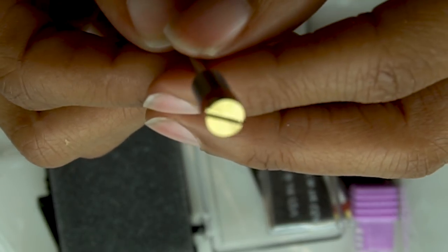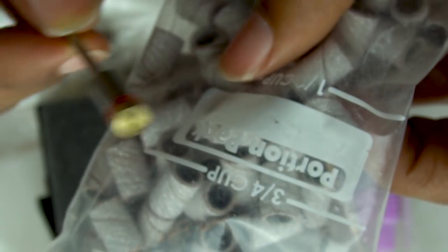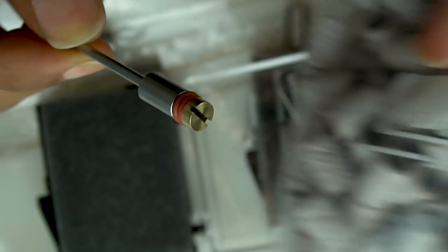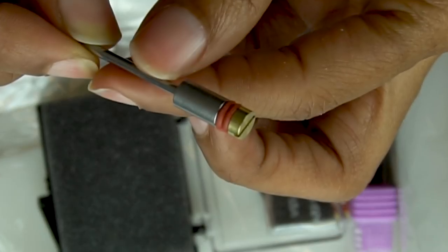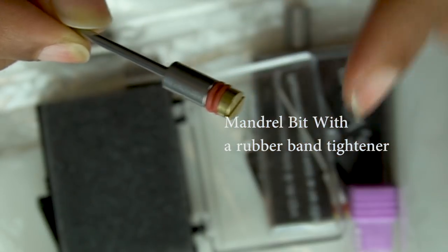You also get this right here. You can actually use this to, you know, when sometimes your sanding bands come off or they're loose, you can open this with this little rubber thing here and it tightens your band.